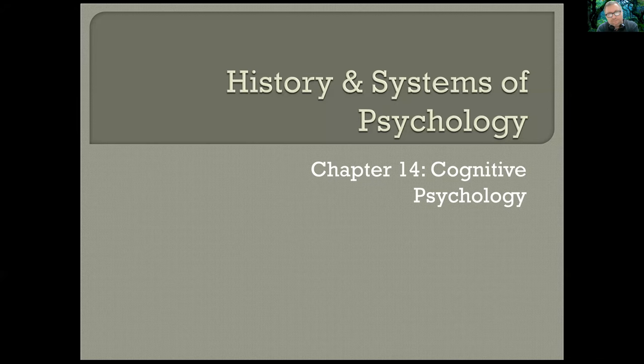We're ready to go here for Chapter 14, Cognitive Psychology. This is a kind of important chapter in the context of the rest of the class, because everything we've been doing so far has been a lead-up to modern experimental psychology. That's been one of the goals — to trace the history of psychology from the earliest philosophical questions about the nature of mind into the early days of experimental psychology, which we covered back in Chapters 7 and 8.